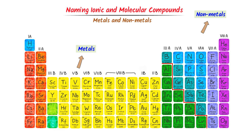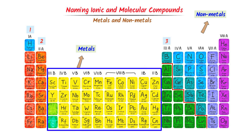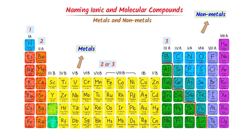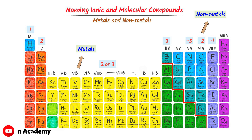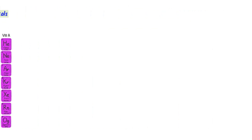Secondly, you must learn the charges of elements. The charge on first group elements is +1, the charge on second group elements is +2, and the charge on third group elements is +3. Remember that transition metals have either a +2 or +3 charge. For non-metals: the charge on seventh group elements is −1, the charge on sixth group elements is −2, and the charge on fifth group elements is −3.